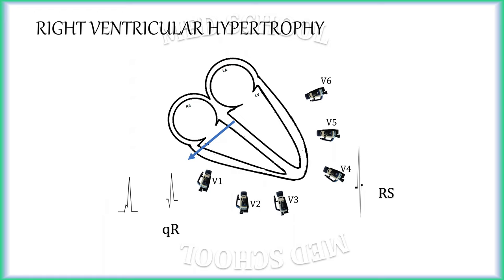Peculiarly, in right ventricular hypertrophy, the transition zone will have equal but large amplitude of R and S waves. As the vector is directed away from V5 and V6 electrodes, leads V5 and V6 have prominent S waves.